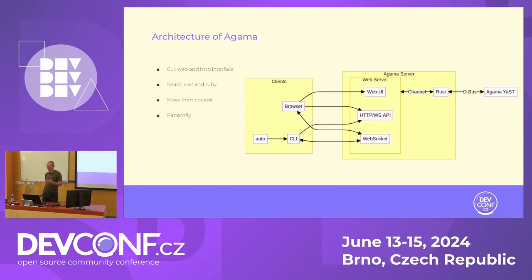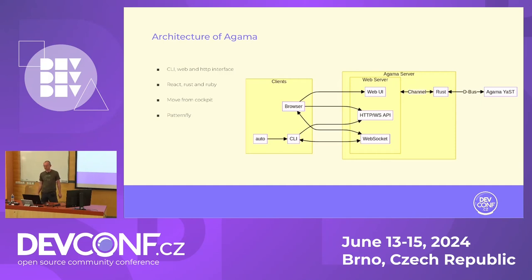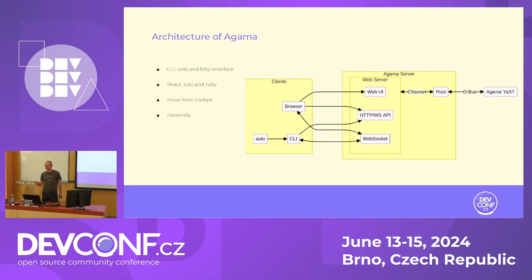The backend contains an HTTP API and also WebSocket. WebSocket is used for sending events from the backend when something changes or to report progress during installation. We also plan to use WebSocket for terminal support. Auto-installation uses the command line interface — it's basically an automated way to call the CLI with some kind of profile.